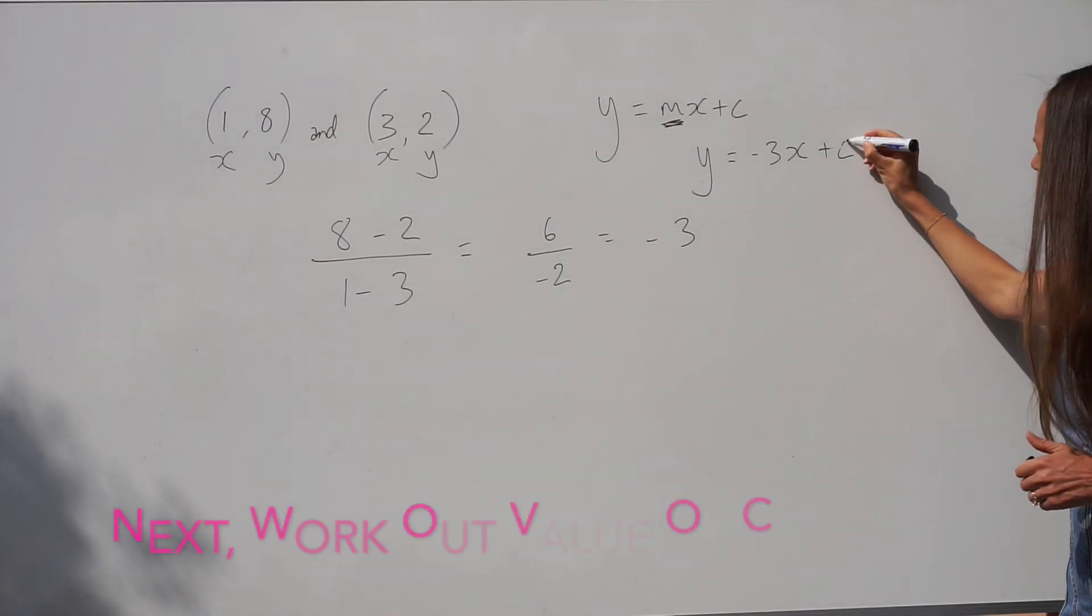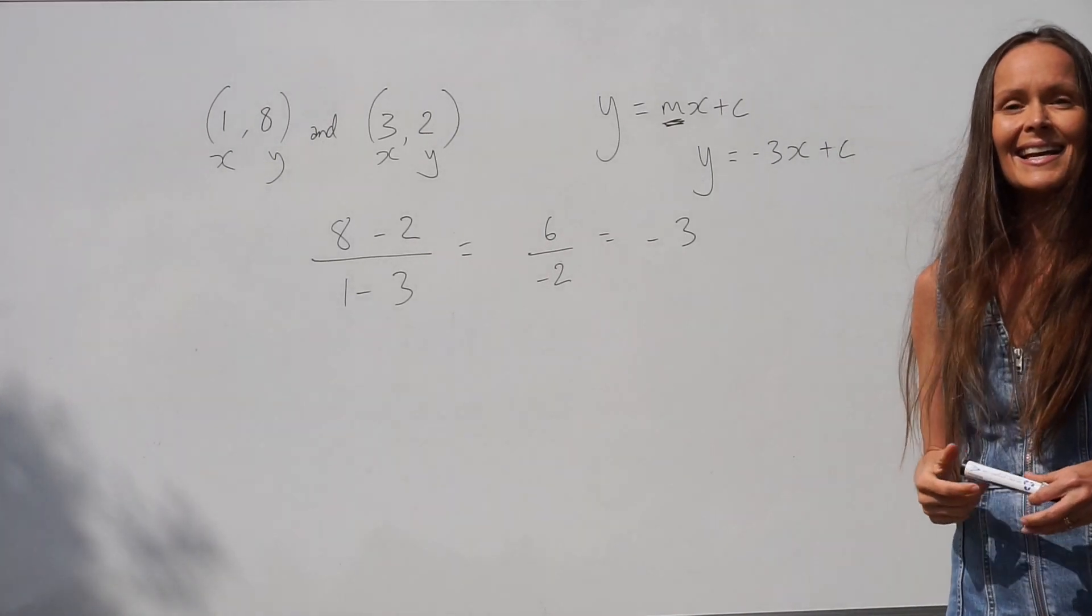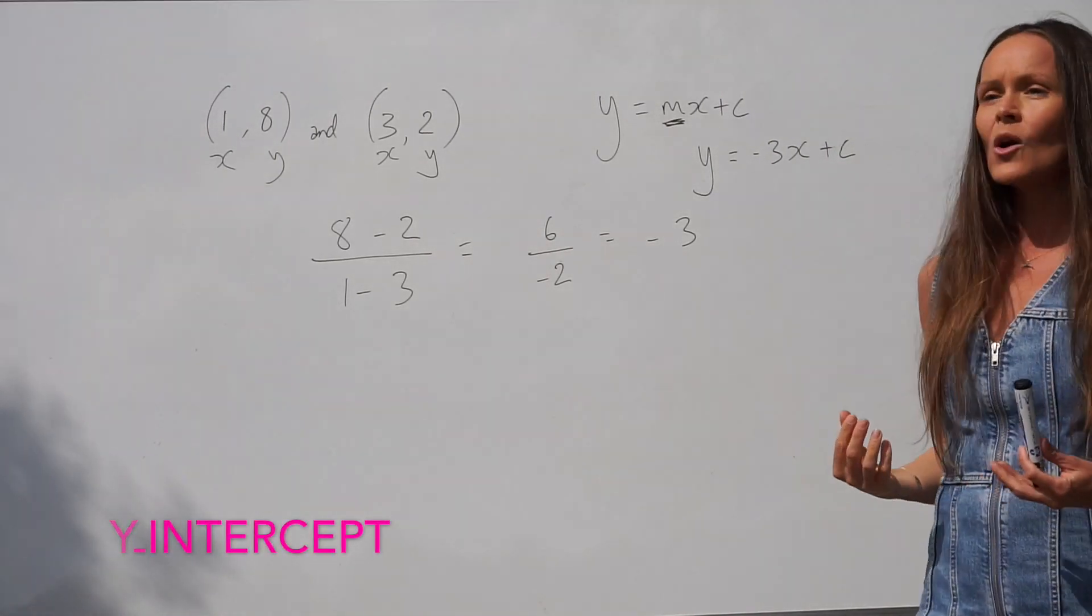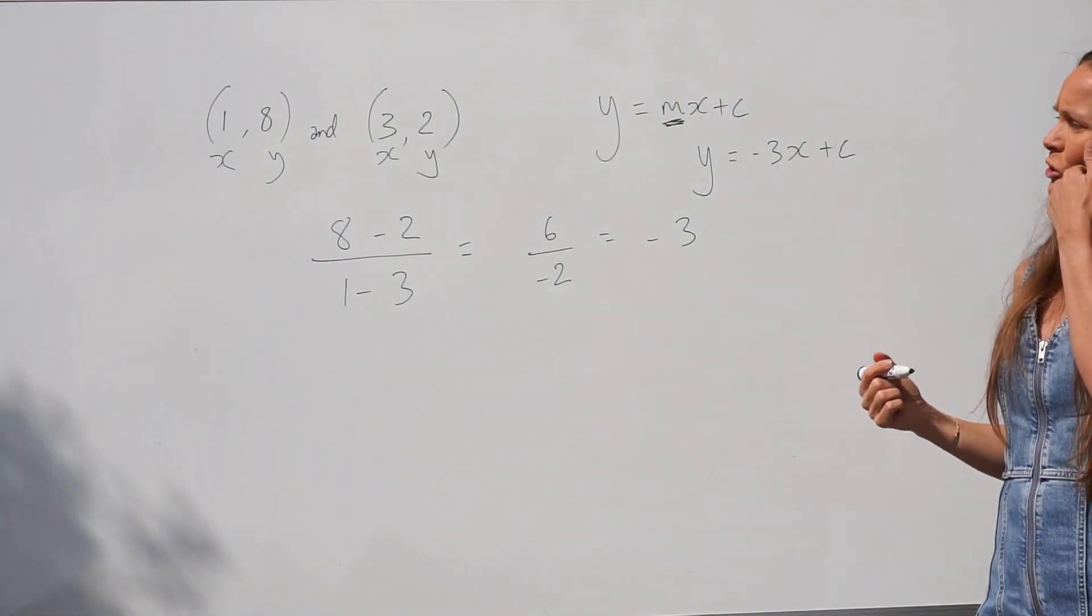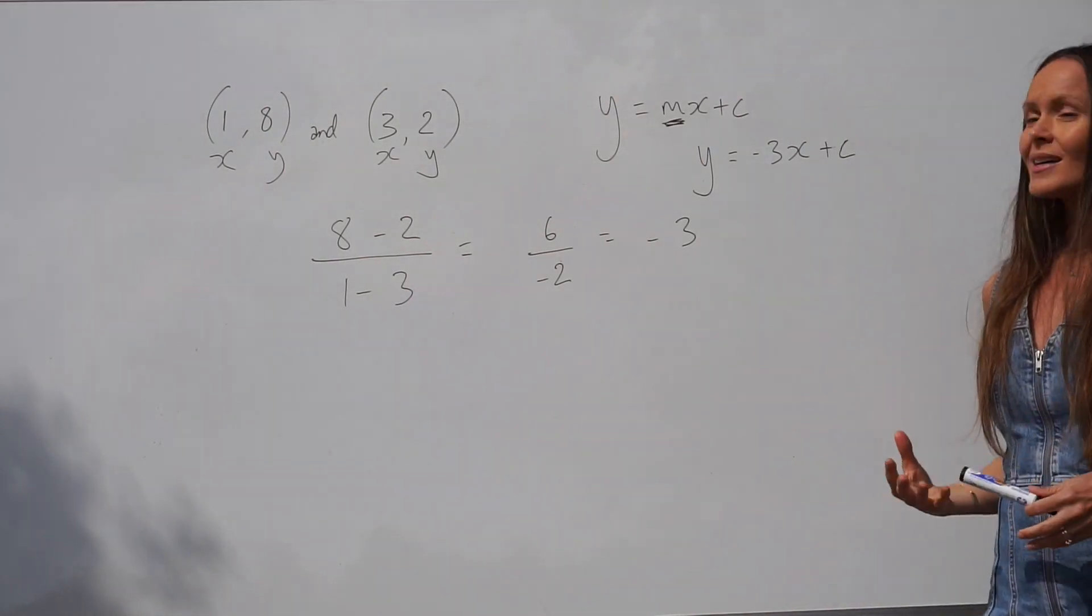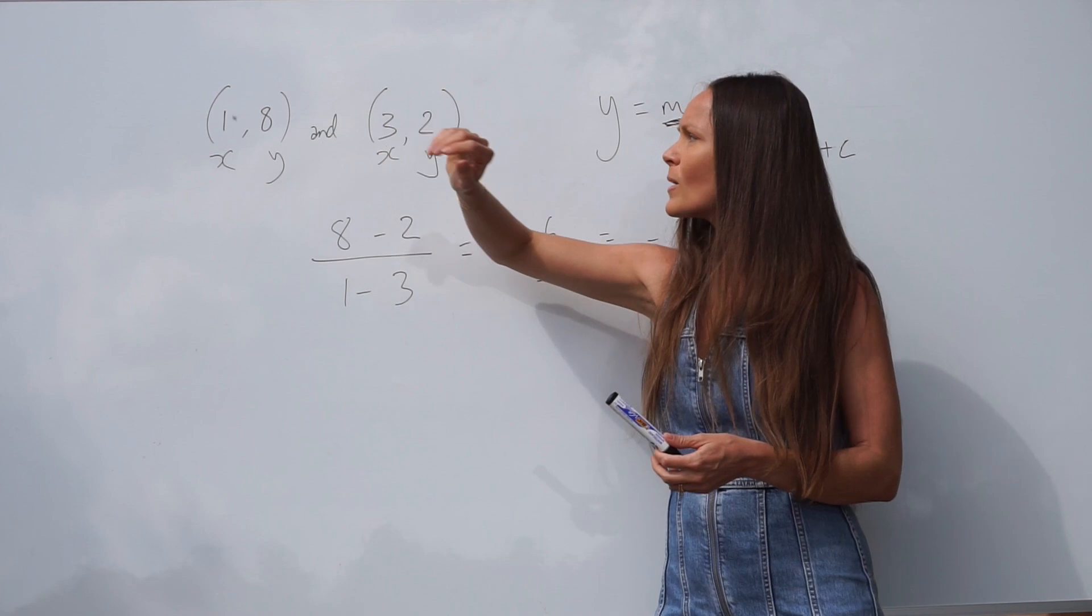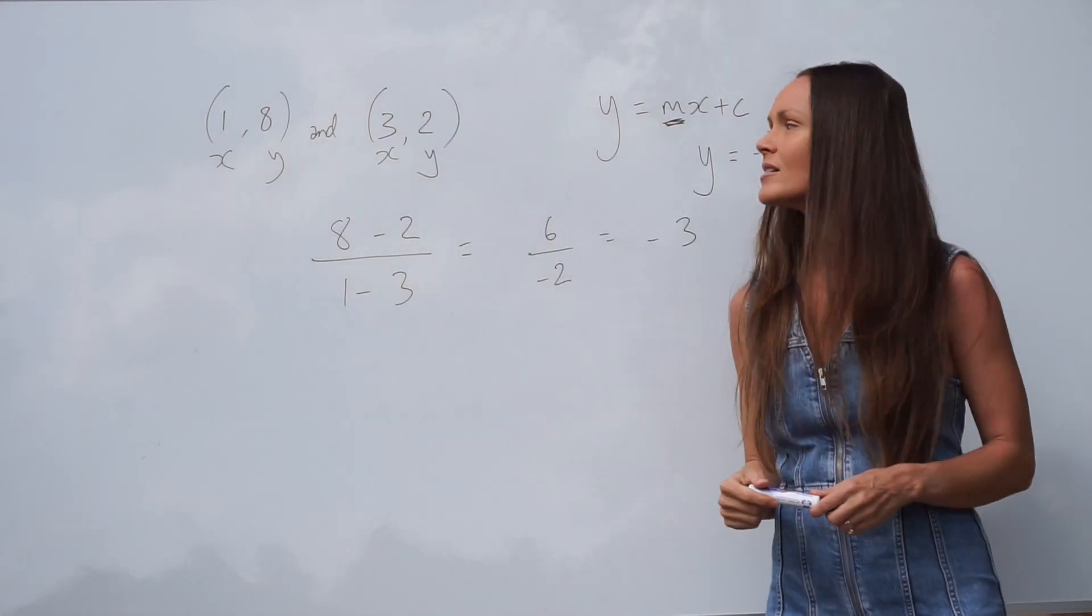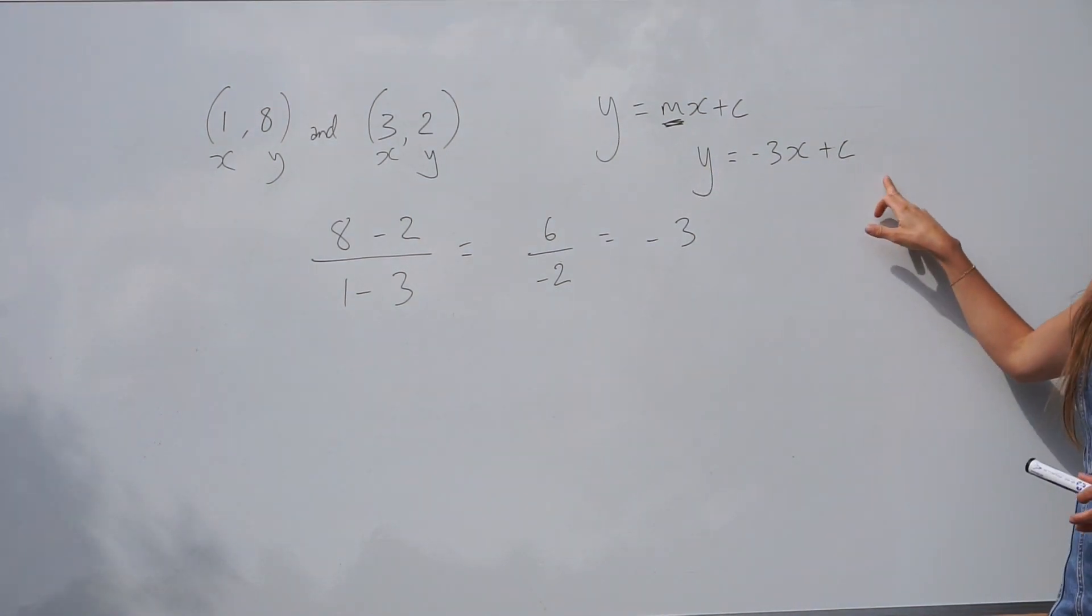The next thing to do is work out the value of c. c is the y-intercept. That just means where the straight line crosses the y-axis. To find out the value of c, the y-intercept, you need to choose a set of coordinates. It doesn't matter which ones you choose. You can choose these ones or these ones. You'll get the same answer either way. And you substitute them into this equation.